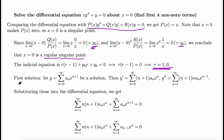The first solution is always given by the larger root, which in this case is r = 1. So we take y = Σ(n=0 to ∞) aₙ x^(n+1) as a solution. We then find the first derivative and the second derivative. Note that the second derivative sum starts from n = 1, since the n = 0 term would be zero.